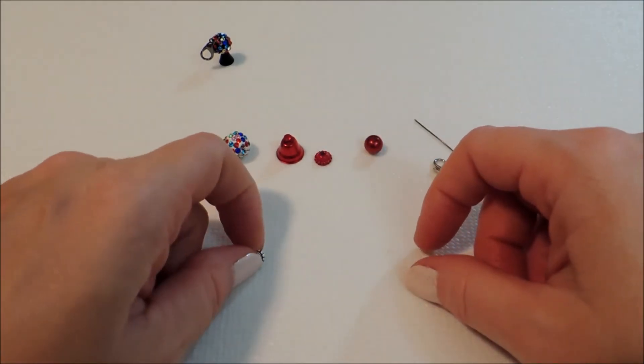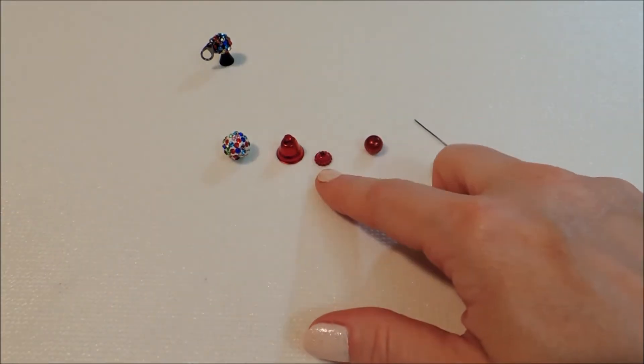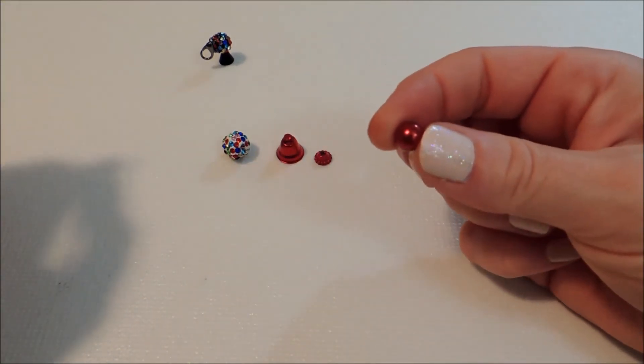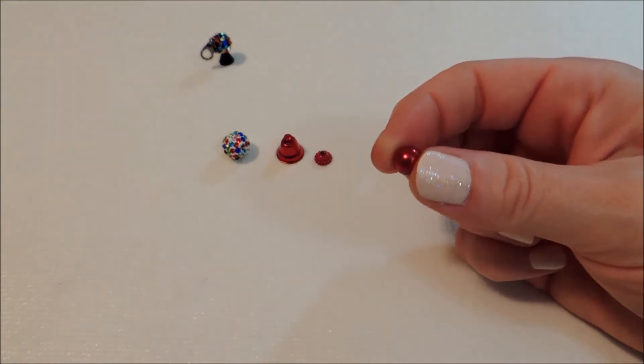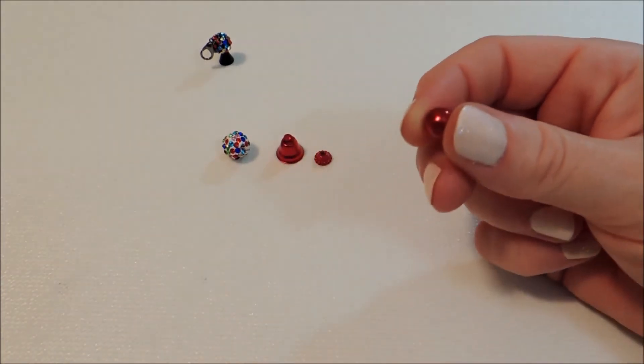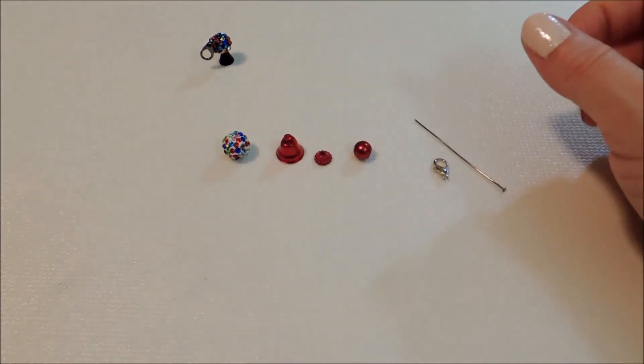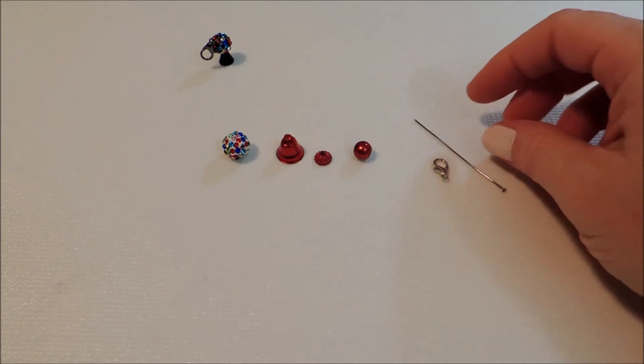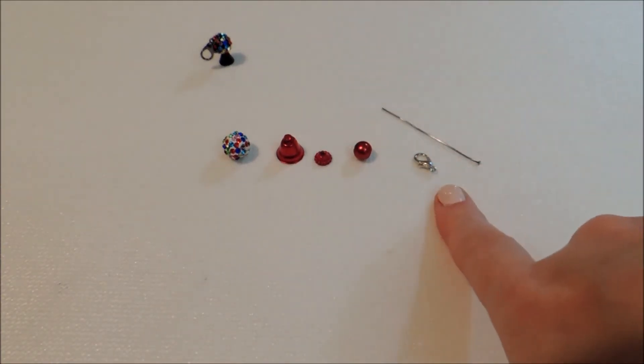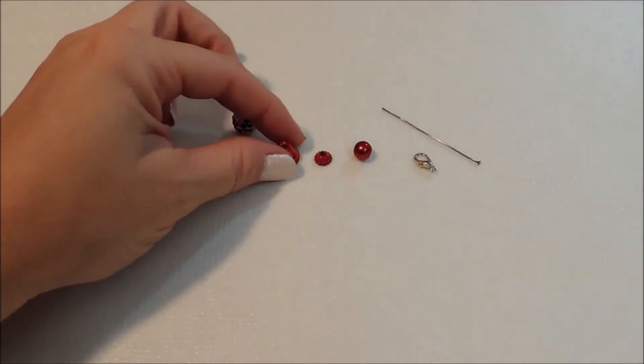After the fingernail polish dries, just coat over that with a little bit of Mod Podge. Then we have an eight millimeter pearl bead—you can use anything here, this is just going to go up inside of the base to help stabilize that a little bit. I just chose the red pearl so that it would blend in and hopefully not show up much at all. Then I have a two inch head pin and a lobster clasp, and we'll also be making a jump ring.